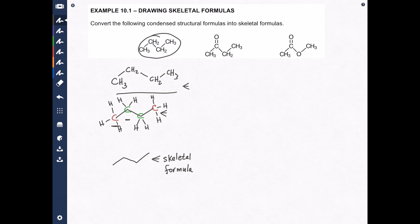So that's how you do it — that's the first one. Every carbon must have four bonds in a skeletal formula. The carbons and the hydrogens are never shown. Other atoms must be shown, though, so if no atom is shown, it's assumed to be hydrogen. In your skeletal formula, if you have non-hydrogen or non-carbon atoms, you must draw them in.